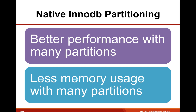Another big performance improvement is support for native InnoDB partitioning. Before MySQL 5.7, each partition was essentially its own table with a partition storage engine layer bolted on top. Now InnoDB implements its own partitioning and removes that overhead, providing two important benefits: much better performance — making partitioning usable with large numbers of partitions like thousands — and much less memory usage when you have a large number of partitions.